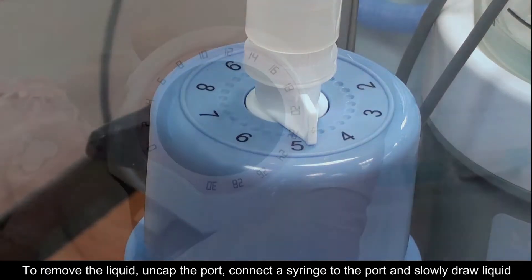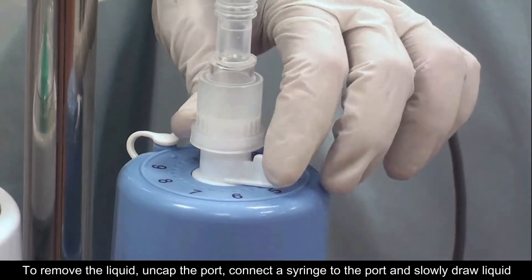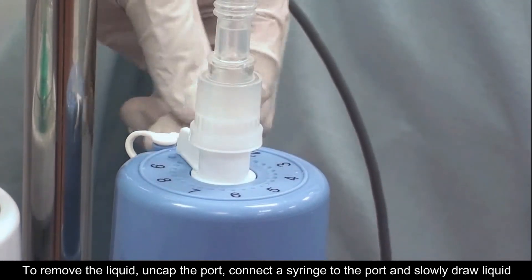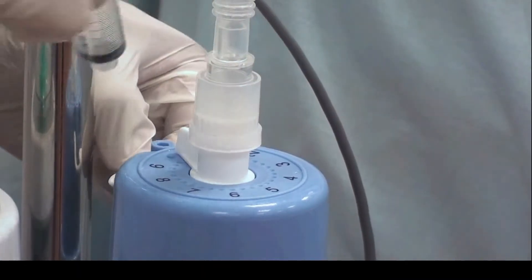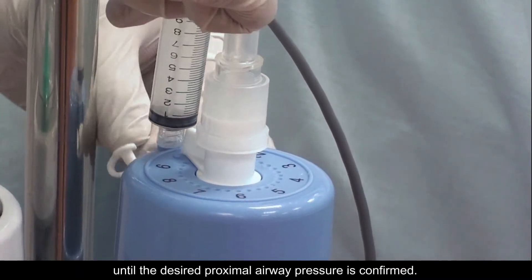To remove the liquid, uncap the port, connect a syringe to the port, and slowly draw liquid until the desired proximal airway pressure is confirmed.